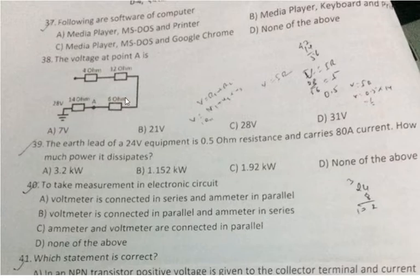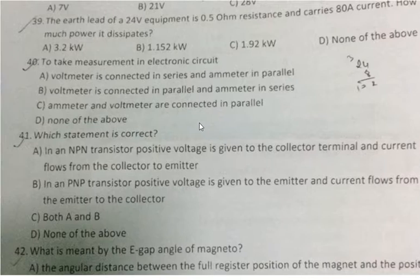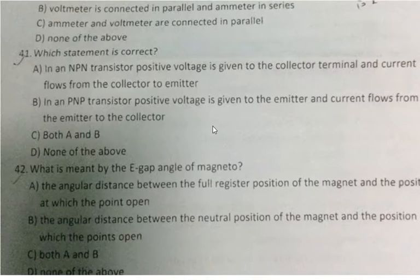Question 40: To take measurement in electronic circuit, voltmeter is connected in parallel and ammeter in series. Option B is correct.